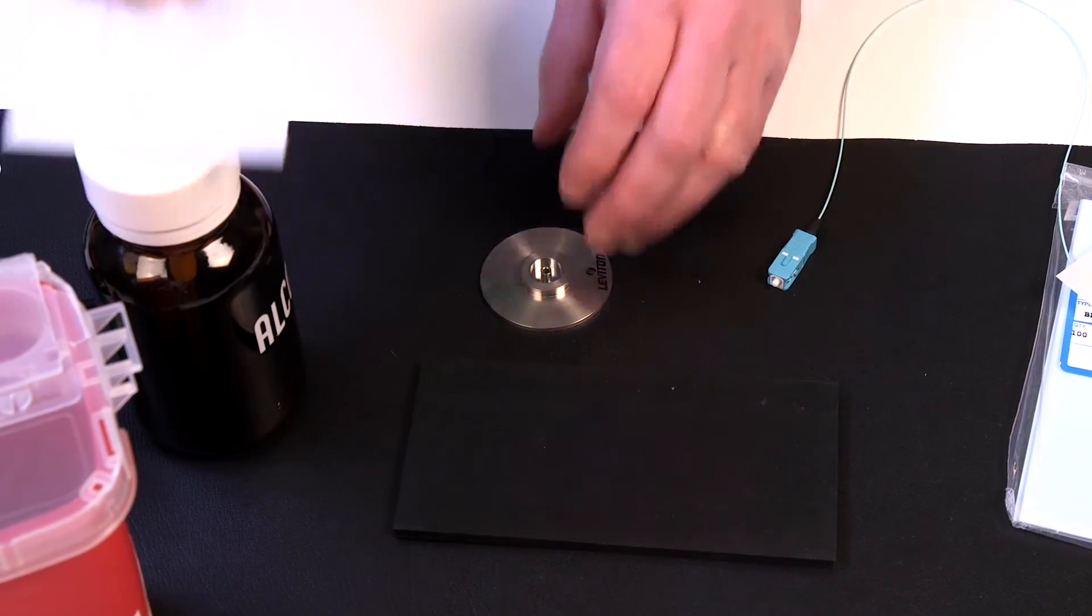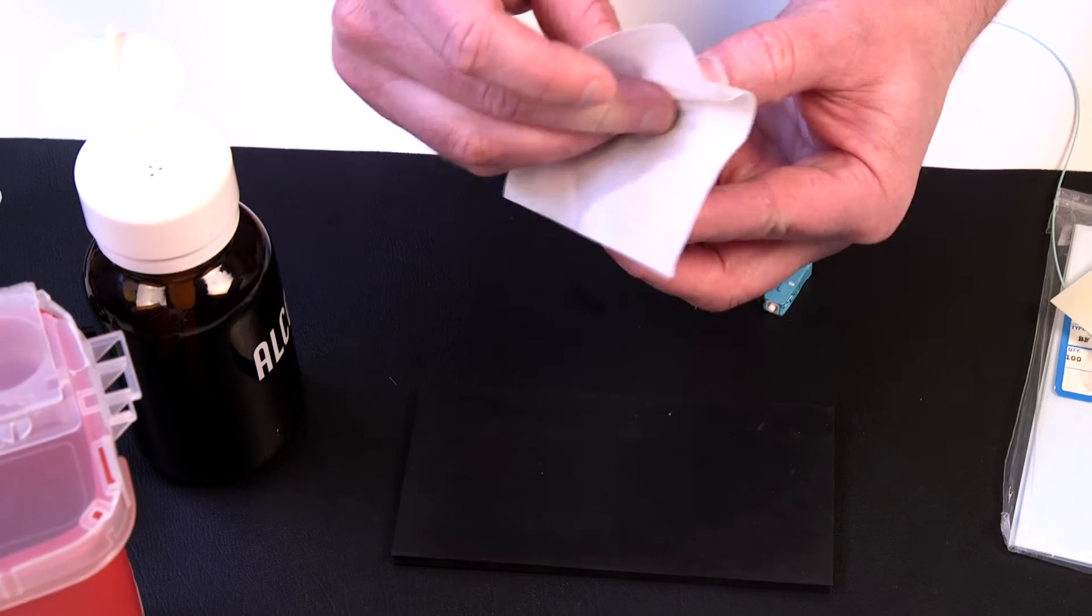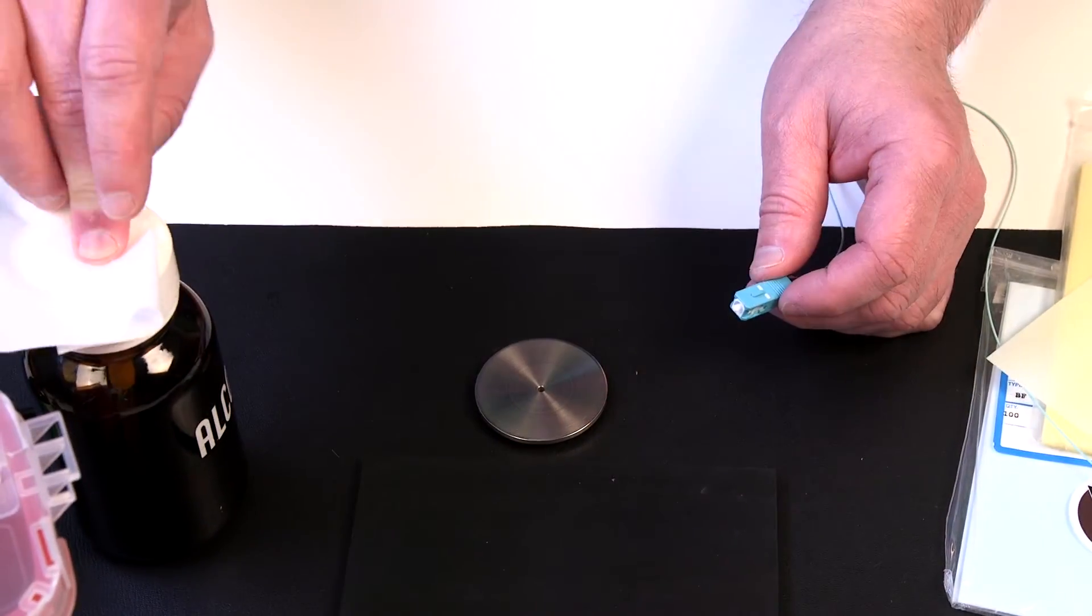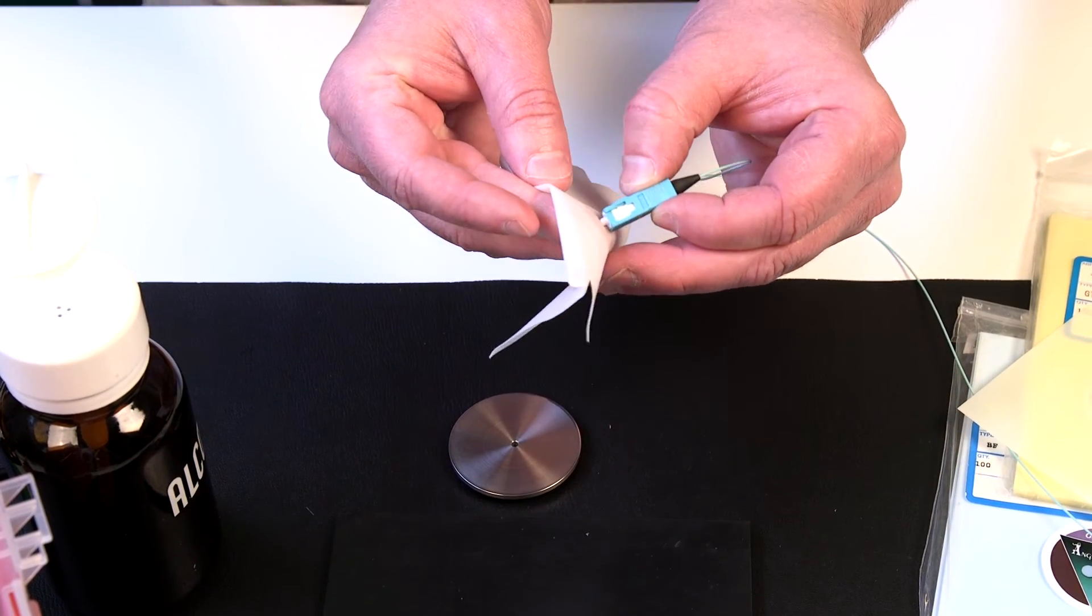To continue the polishing process, wipe the bottom surface of the 2.5 millimeter polishing puck. Wipe the surface of the connector with a 99% alcohol wipe.